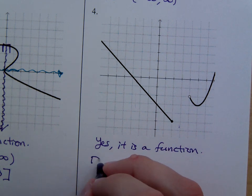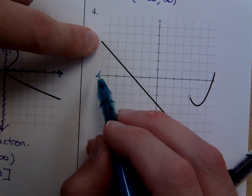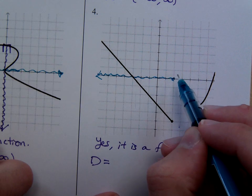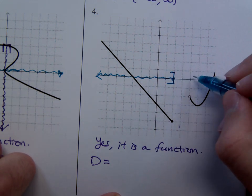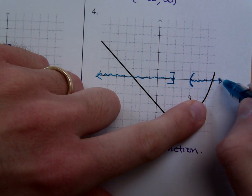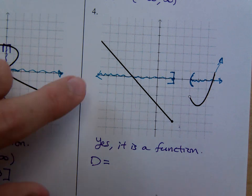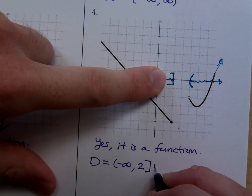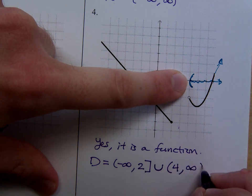What about the domain? This graph goes all the way out to the left and keeps going until it gets to right here, and then it just stops. This point is included, so there would be a bracket there. But then there's a gap where there are no x values used. Then it gets picked back up right here, goes down and goes up, and keeps on going. So the domain is from negative infinity to positive two, including that, union, picking back up at four — not including four — out to positive infinity.